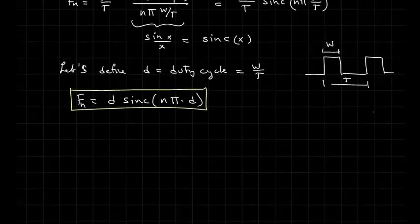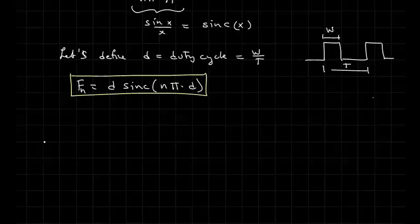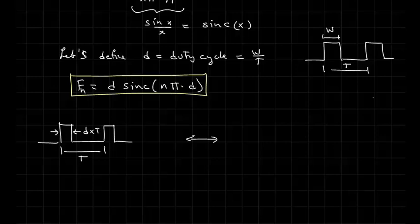Okay, so what have we found? We found that a pulse that has a period of T, capital T, and a duty cycle of d times T has a frequency response that looks like this.